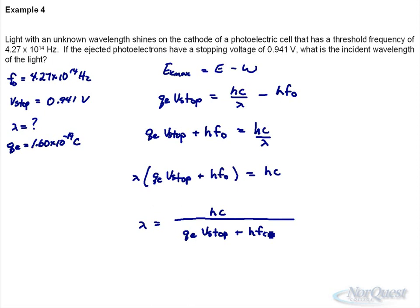So I'm going to go to another slide, write this formula out, and then we'll do the substitution. Wavelength equals hc over qₑV_stop plus hf₀. I'm even going to bracket it so I remember to bracket it when I put it on my calculator.